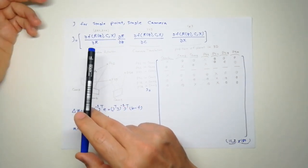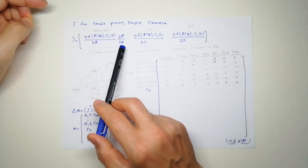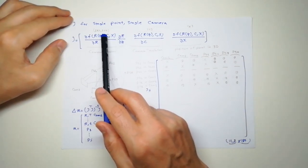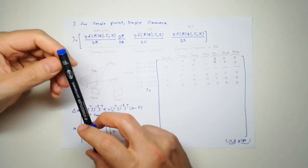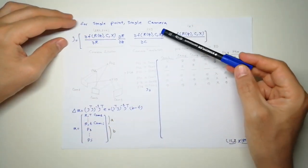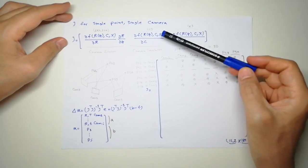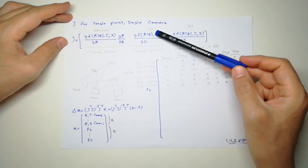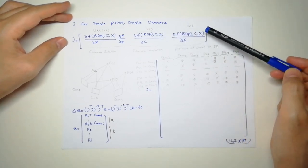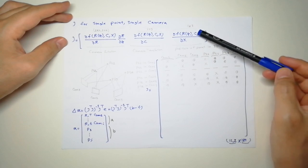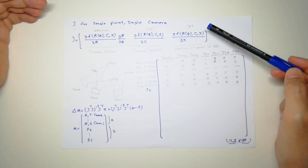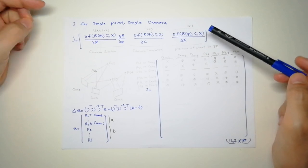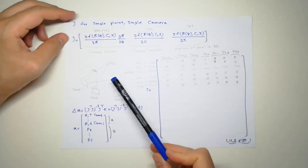Rotation is 3x3, so it has nine parameters, and the quaternion has q0 to q3 — four parameters — so this block is 9x4, giving dimensions of 2x9 and 9x4. The derivative of the first output relative to camera translation has three parameters (x, y, z) with two rows: one for U and one for V. Then the derivative relative to X, the position of the point in 3D space — that's how we fill up the Jacobian.